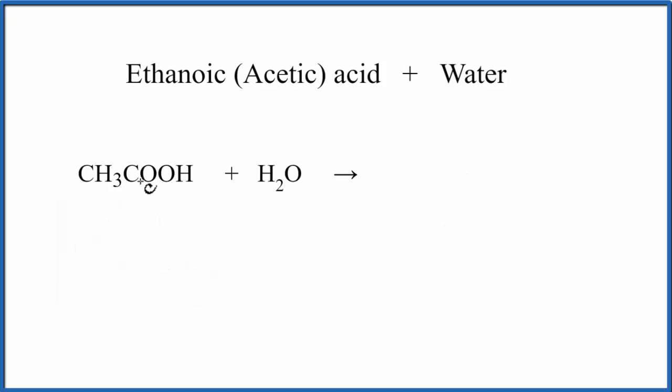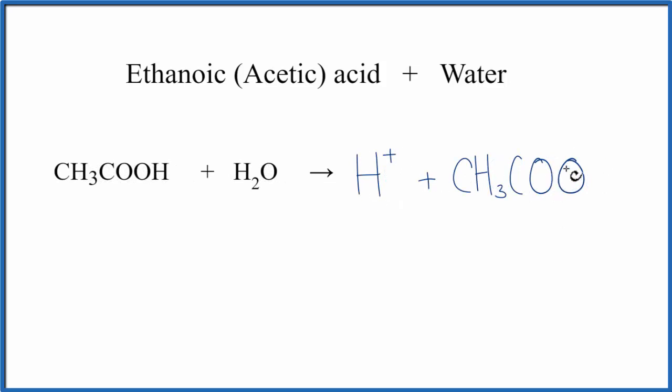So we put CH3COOH in water, and this H breaks off. So that'll give us an H plus. Then we'll have CH3COO, and we have the H plus here. That means that this is going to be negative. This is called the acetate ion.